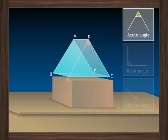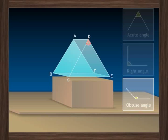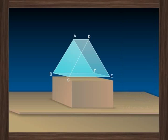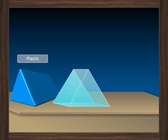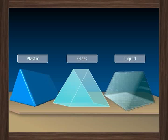This angle may be acute, right-angled or obtuse. A prism with an equilateral triangular base is called an equilateral prism. It has an angle of 60 degrees. Prisms can be made of different materials like plastic, glass or even liquid.